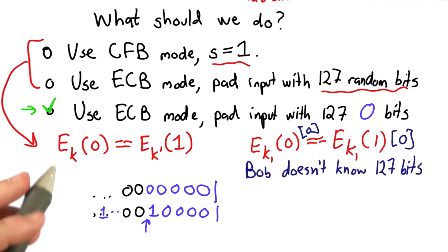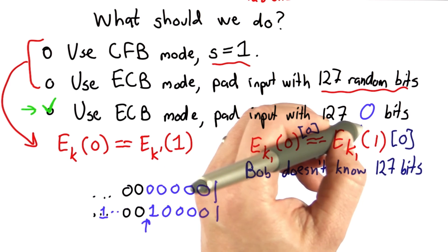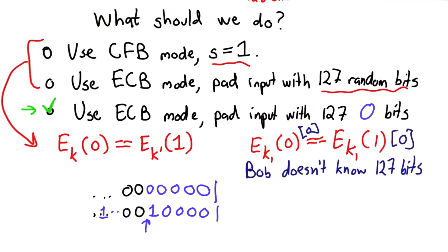In this case, since Alice and Bob both know that there's only one bit for the coin toss, as long as they agree in advance that the padding will be all zero bits, that would be okay.